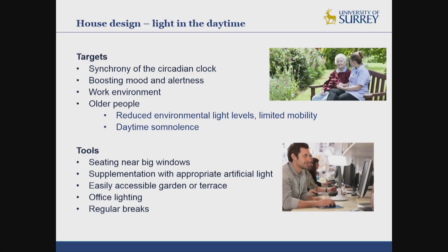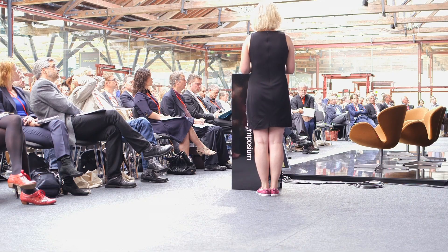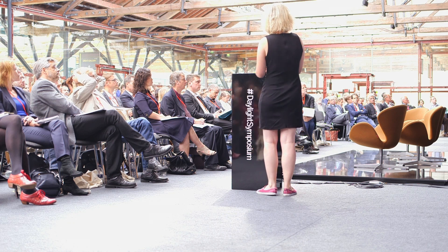During the day, we also want to think about our light environment, and one particular group this is relevant to are older people. Studies of older people in care homes show they tend to be in very low-level light environments — they have limited mobility and often suffer from daytime somnolence. We could supplement with artificial light, but also ensure easily accessible gardens or terraces to boost their light exposure and help with the sleep problems that many older people suffer.